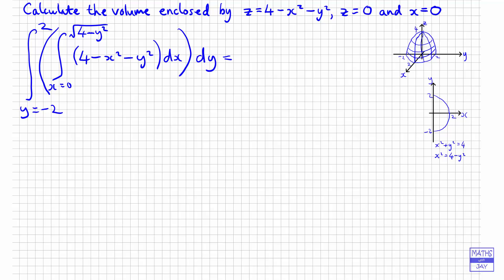So integrating that, we're doing the inner integral first. So we're leaving the y equals minus 2 to 2. And then integrating 4 with respect to x gives us 4x. Integrating x squared gives us x cubed over 3. And then, because we're really doing partial integration, we're fixing y. We're integrating with respect to x.